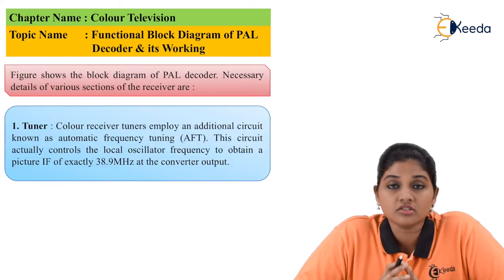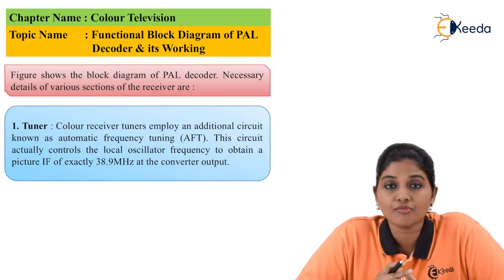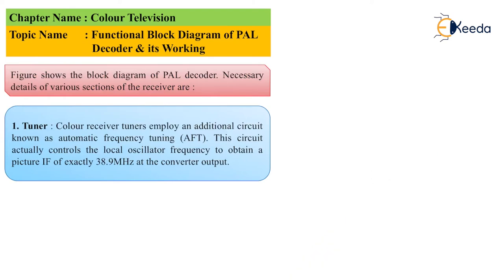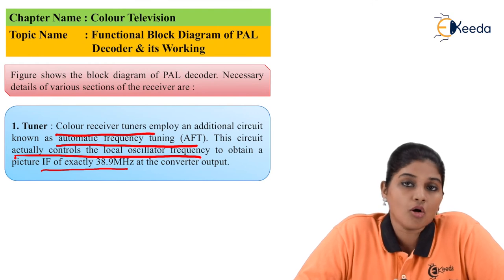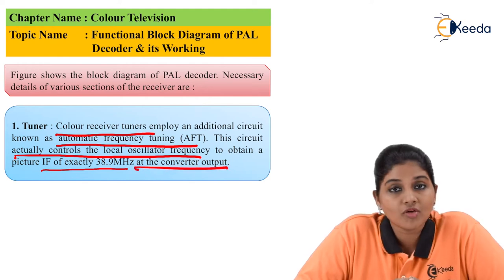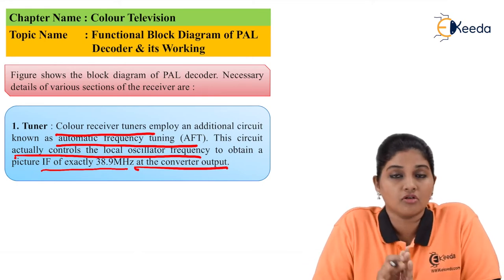The antenna is used to receive signals from the suitable channel, consisting of both audio and video signals, and the signal is given to the AFT circuit and tuner circuit. The color receiver tuner uses an additional circuit called Automatic Frequency Tuning (AFT), which controls the local oscillator frequency so that the exact AFT frequency of 38.9 MHz is obtained at the output of the converter. This precise frequency value ensures proper synchronization between transmitter and receiver.